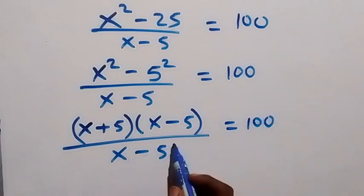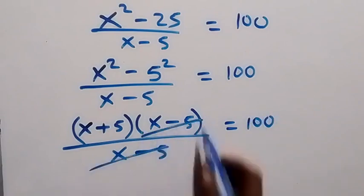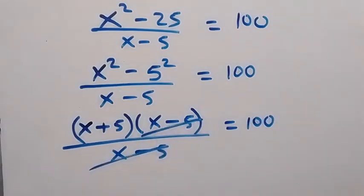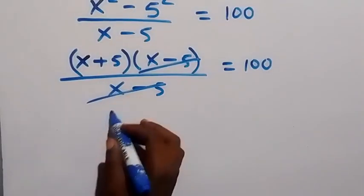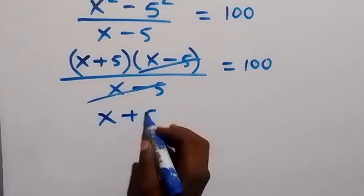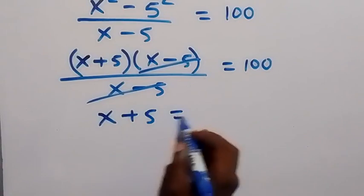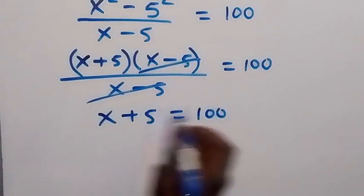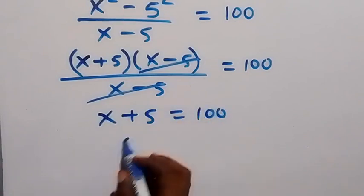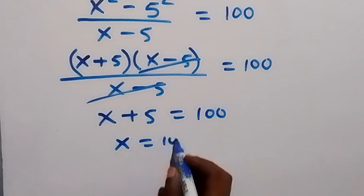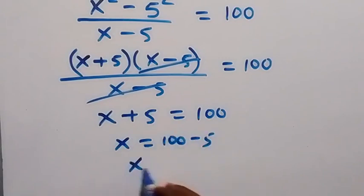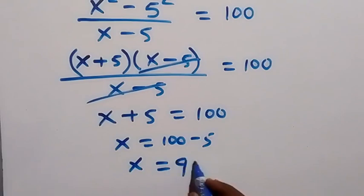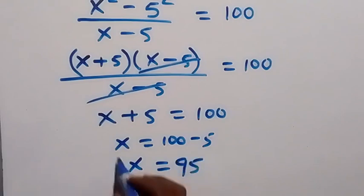From here, (x minus 5) cancels with (x minus 5), and we are left with x plus 5 equals 100. Taking 5 to the other side, we have x equals 100 minus 5, so x equals 95.